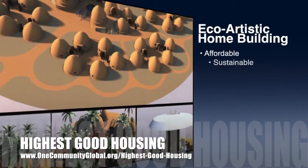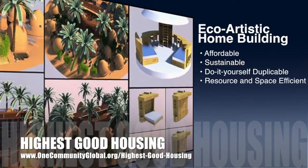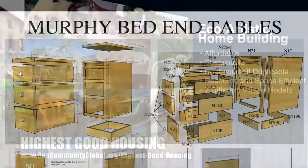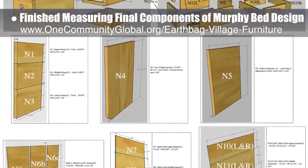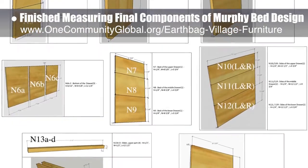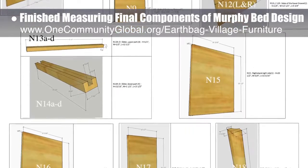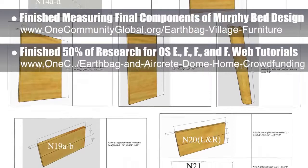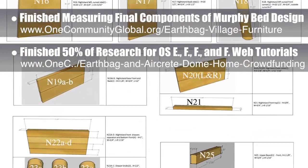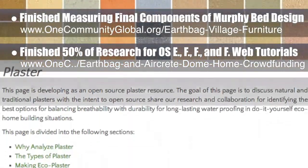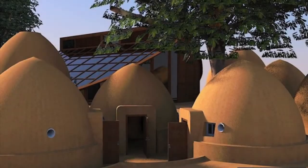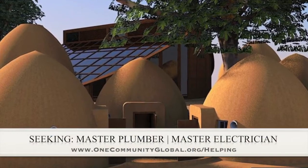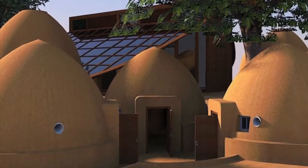The One Community approach to Highest Good Housing is eco-artistic home building that is affordable, sustainable, do-it-yourself duplicable, resource and space efficient, and consists of seven different sustainably constructed village models. This week, the core team finished measuring and inventorying the rest of the components of the Murphy Bed and cabinets for the furniture design for the EarthBag Village domes and dome home crowdfunding campaign. Here you can see them all labeled in preparation for building instructions. We also finished about 50% of the research for the open source excavation, foundation, footers, and floor web tutorials, and about 50% of the new open source plaster page. We are seeking a master plumber and a master electrician.